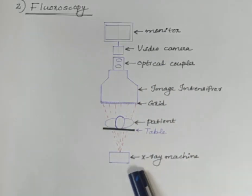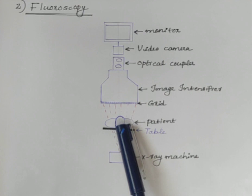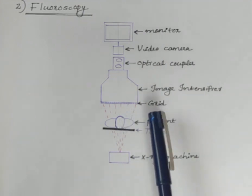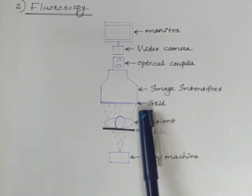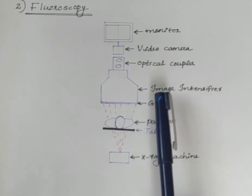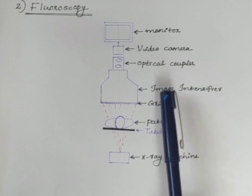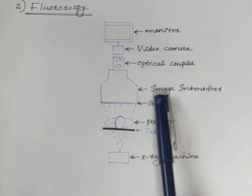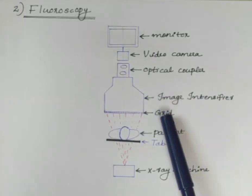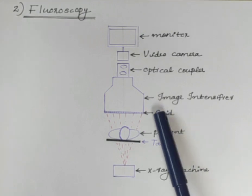The X-rays generated by the X-ray machine passes through the patient and it is collected by the grid circuit. The image intensifier is a complex electronic device that receives the X-ray beam from the human body and converts it into light.